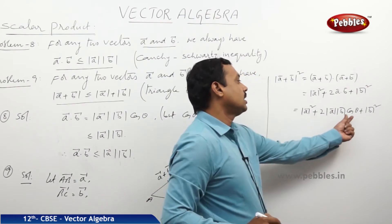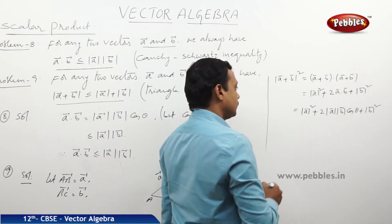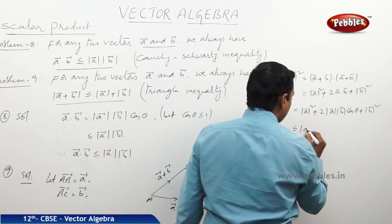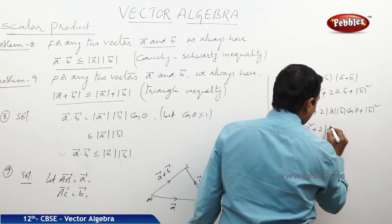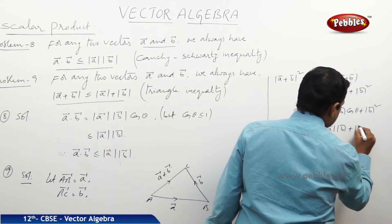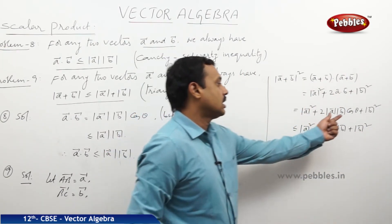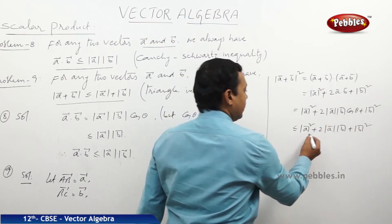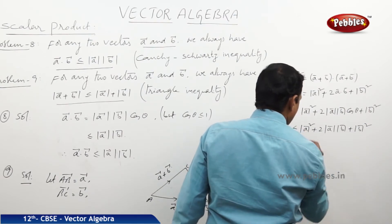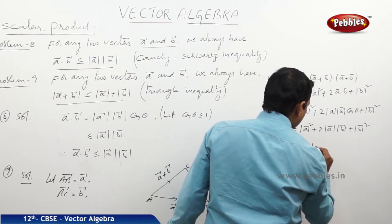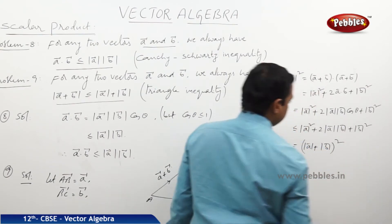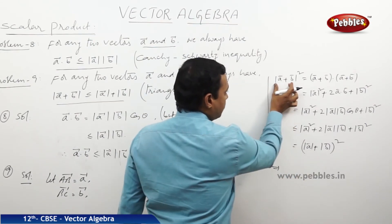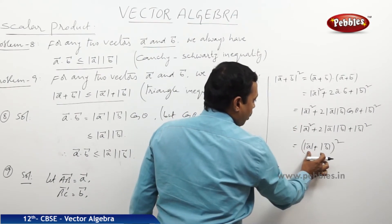But the maximum value of cosθ is 1. Hence this total summation should be less than or equal to |a|² + 2|a||b| + |b|², since we replace cosθ by its maximum value of 1. And you know this is the expansion of (|a| + |b|)². So this implies that |a+b|² ≤ (|a| + |b|)².